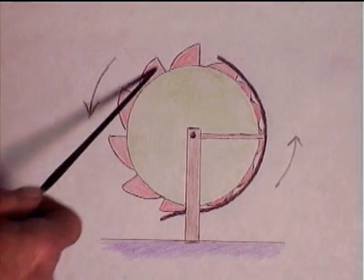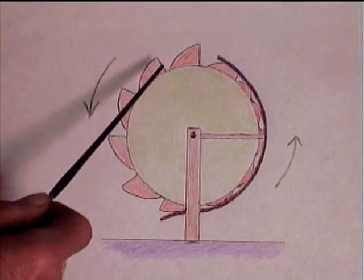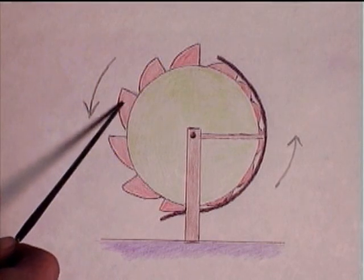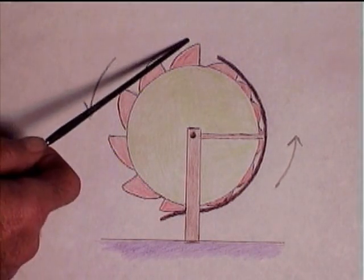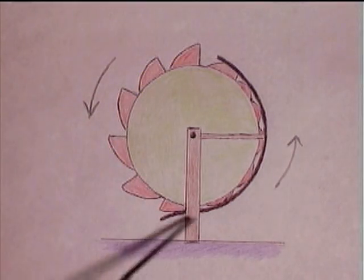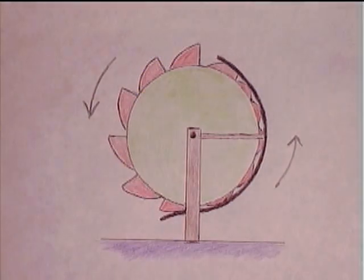This side of the wheel is heavier because these water-filled protrusions stick out. So the wheel rotates downward on this side and upward on this side.